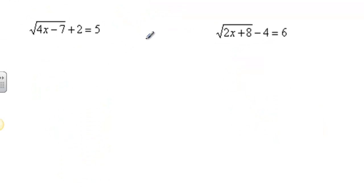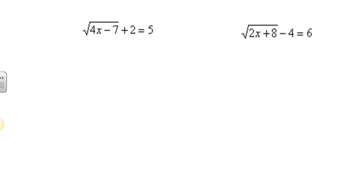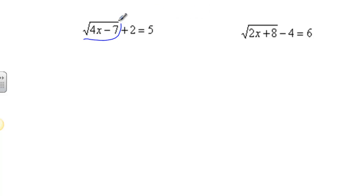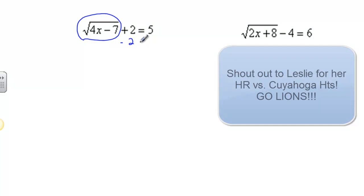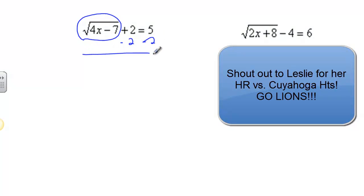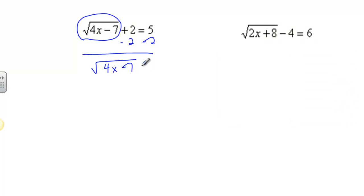The next example is going to start getting a little trickier. We have the square root of 4x minus 7, plus 2, equals 5. Here's my radical — always identify where your radical is first. Since that's my radical, I need to get everything else away, so I'm going to subtract 2 from both sides. I have the square root of 4x minus 7, and that's equal to 3.